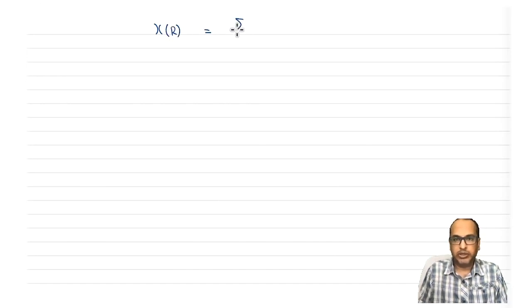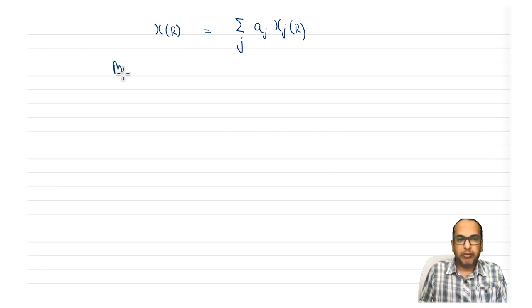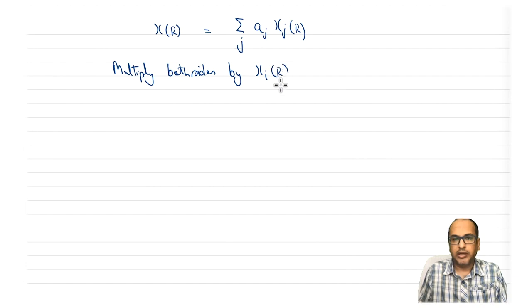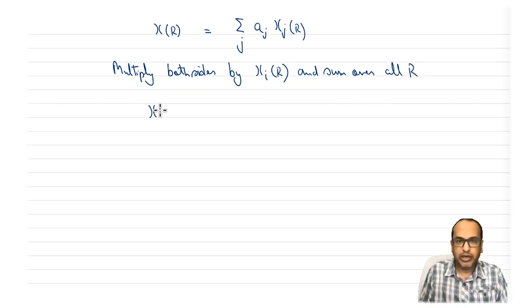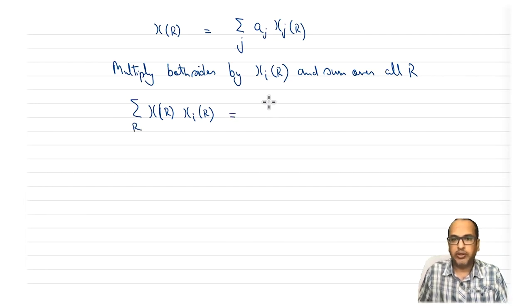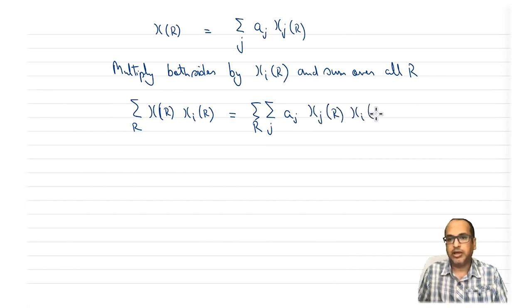Let's work out the mathematics. We have chi(R) = sum over J of A_J · chi_J(R). Now, if we multiply both sides by chi_I(R) and sum over all symmetry operations R, on the left-hand side we get the sum over all R of chi(R) · chi_I(R), and on the right-hand side we get the sum over J and sum over R of A_J · chi_J(R) · chi_I(R).